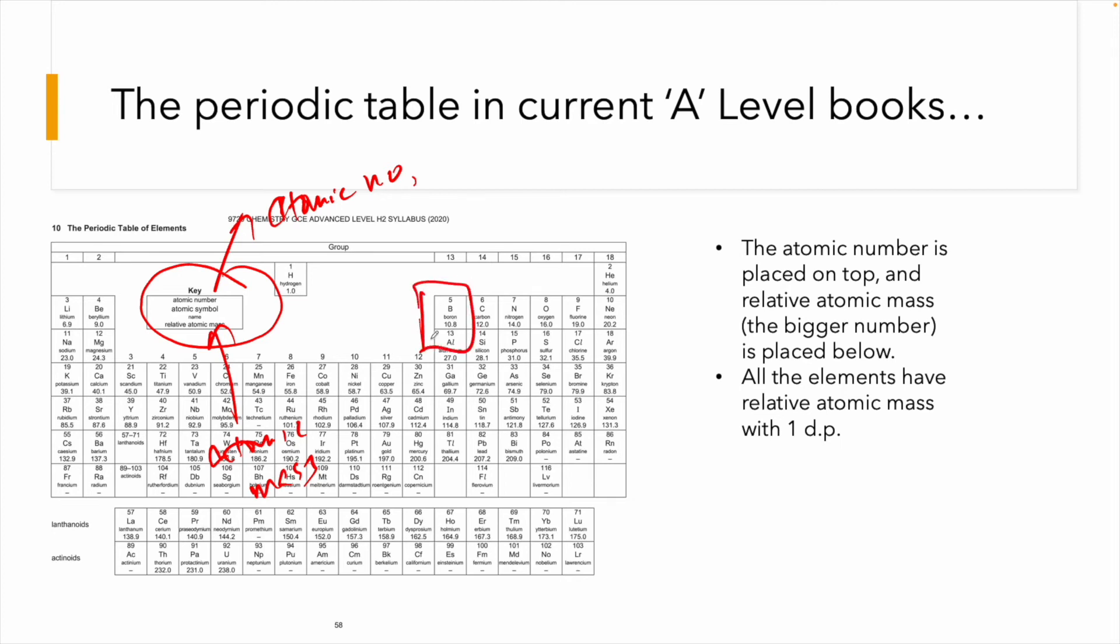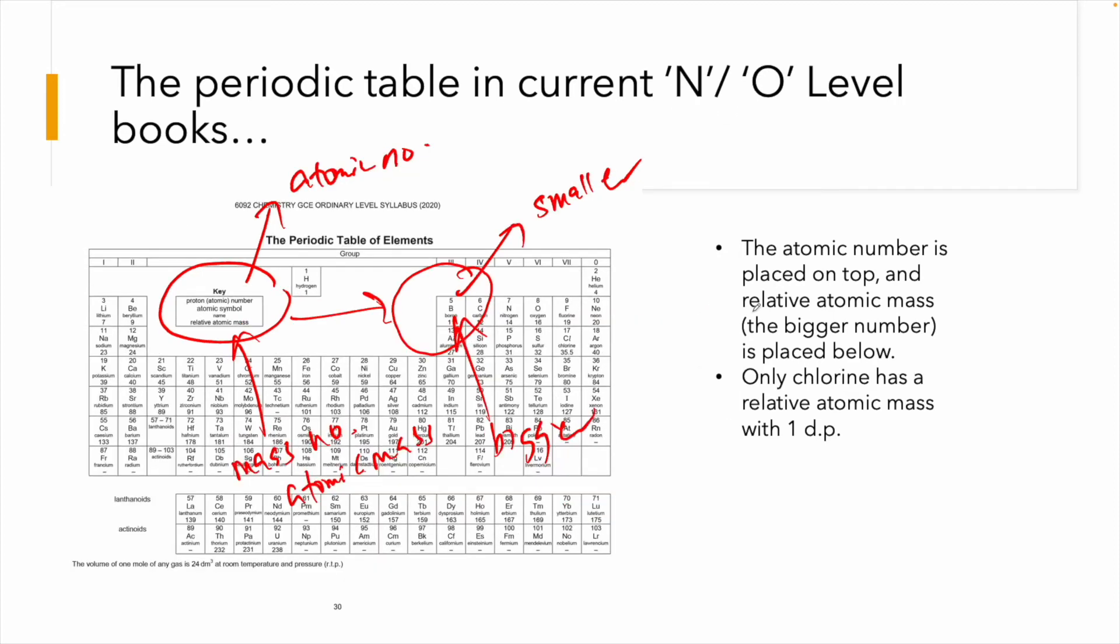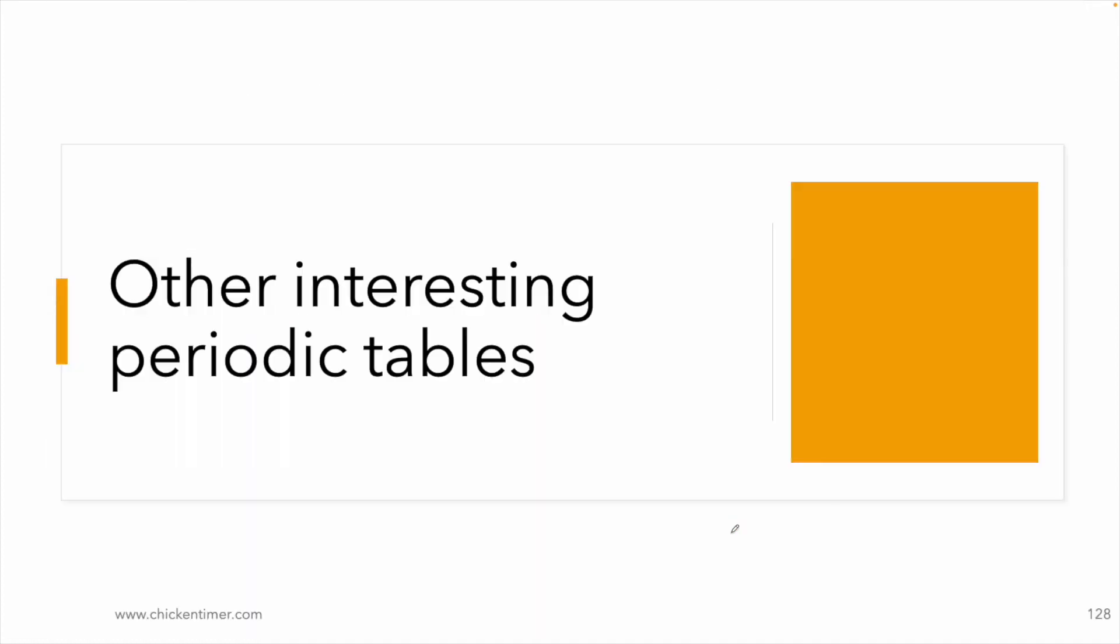So if you want to have a clearer view example, you can see boron. Then boron has smaller number on top and then the bigger number below. If you take a flash, we just go back for a bit and you'll see that this one, the bigger numbers on top, the smaller ones below. Then the current A-level books is also arranged in the same manner. The look of the periodic table is very much the same. Then you have the atomic number on top again. And then the atomic mass or the mass number is below. Then one difference here is, if you look at boron again, the smaller number is on top, the bigger number is below. Just take note of the mass number. Now the mass number has one DP.